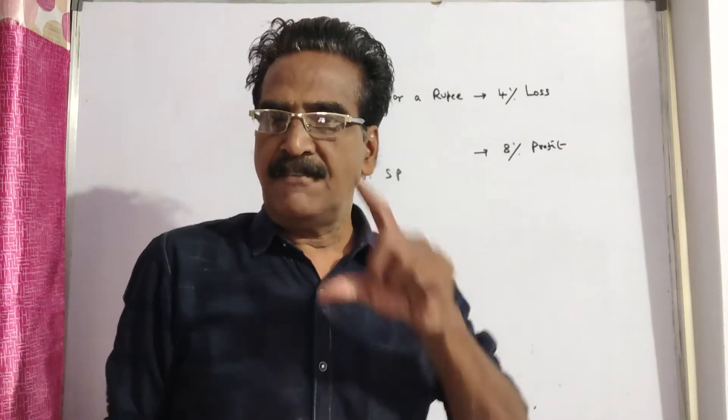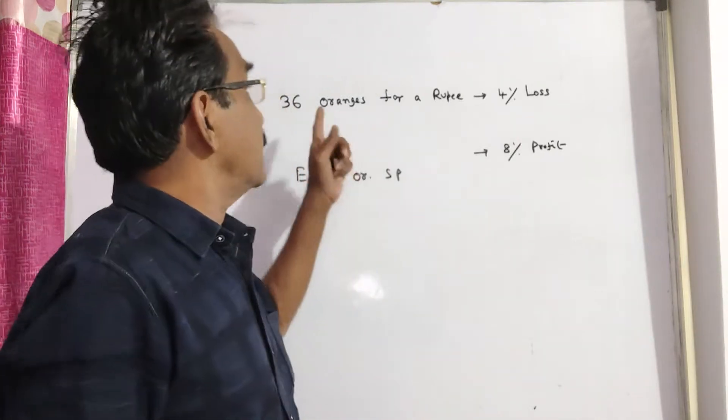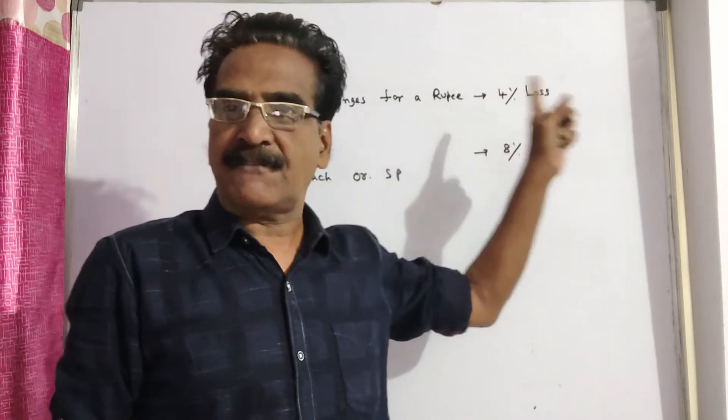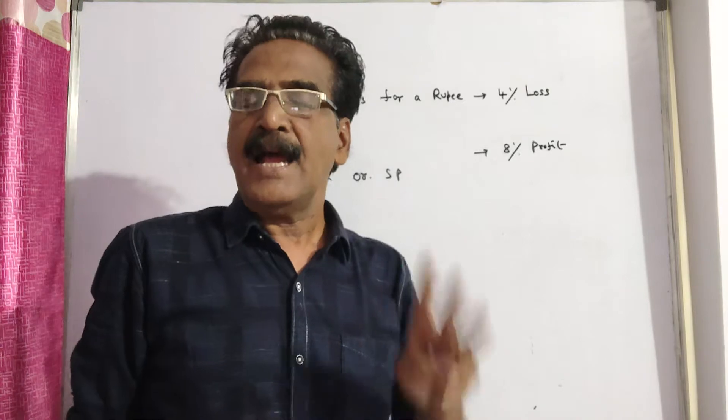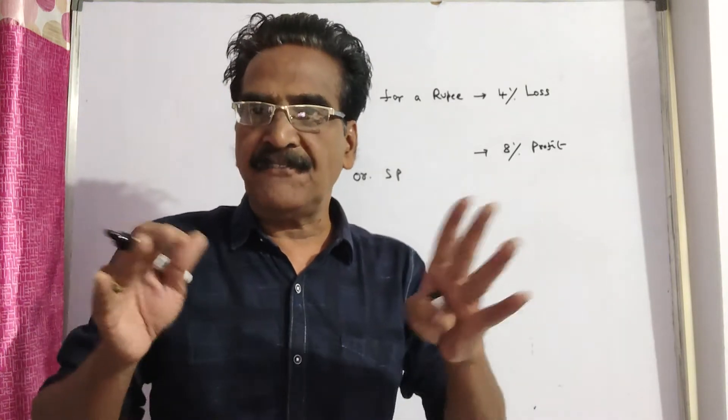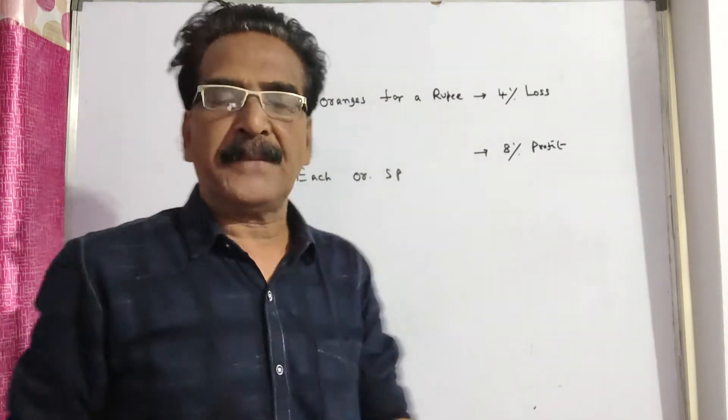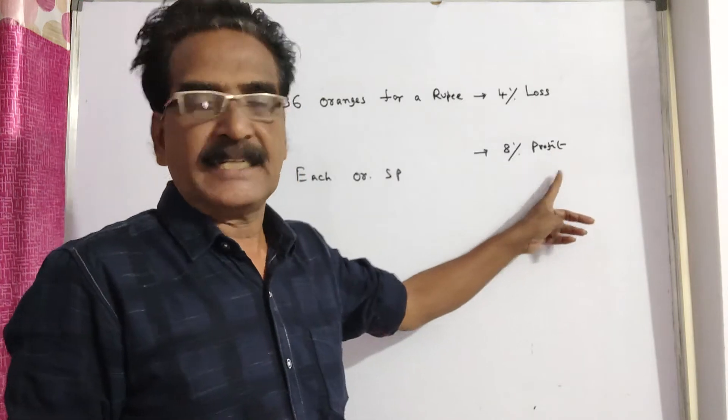Hi friends, good morning. Please look at the next problem in profit and loss. If a man sells 36 oranges for a rupee, he suffers a loss of 4%. The question is, how many for a rupee should he sell to make a profit of 8%?